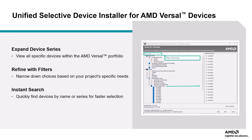The new Filter Device section significantly streamlines the device selection process. It allows you to quickly narrow down your options by simply typing in the name of the device or series. Whether you're looking for something specific like the AMD Versal AI Core series or a specific device in the series, you can find it instantly. This feature is not only fast and searchable, but it also optimizes your selection process, helping you avoid full-size downloads of all device series.